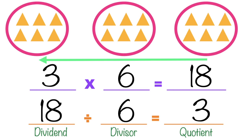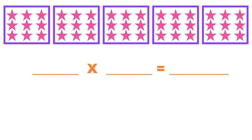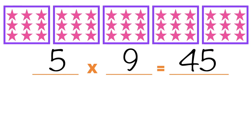Is that clear, children? Let's have another example. We have five groups, and each group has nine stars, so the multiplication sentence is 5 times 9 equals 45.